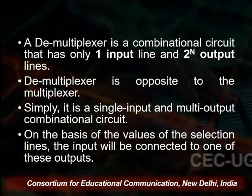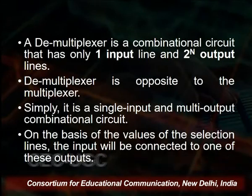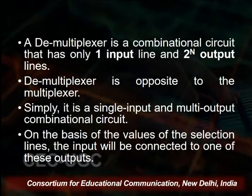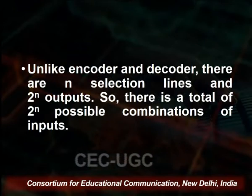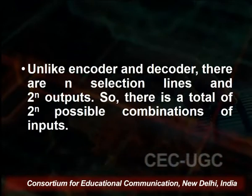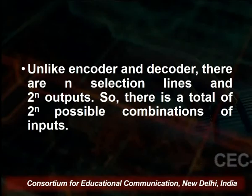On the basis of the values of the selection lines, just like in the case of a multiplexer circuit, the input will be connected to one of these outputs. Unlike the encoder and decoder, there are n selection lines and 2 to the power n outputs, giving 2 to the power n possible combinations. The major difference between encoder/decoder and multiplexer/demultiplexer is that there are no selection lines in the encoder and decoder circuit.